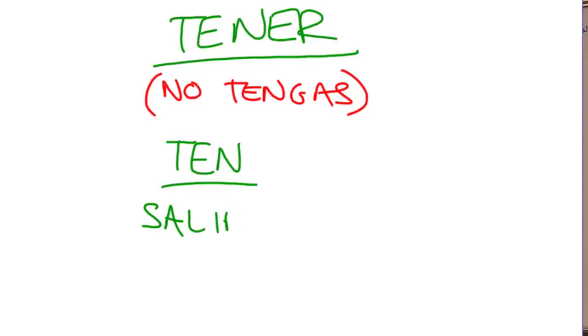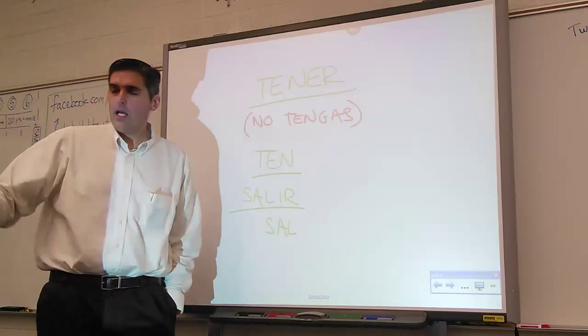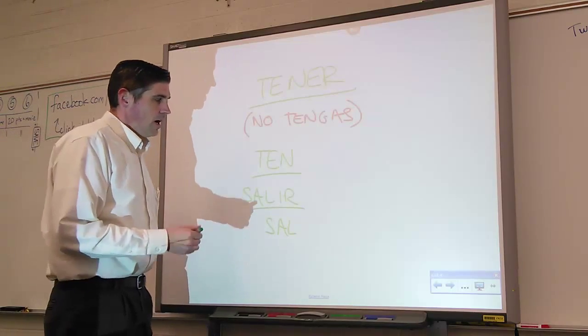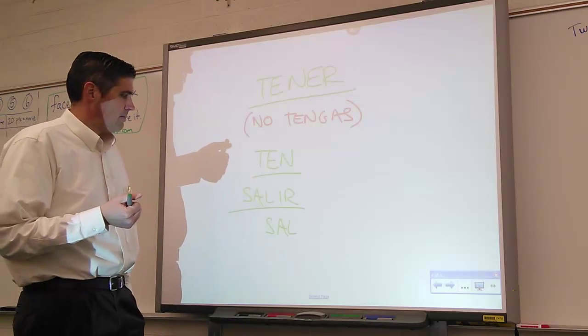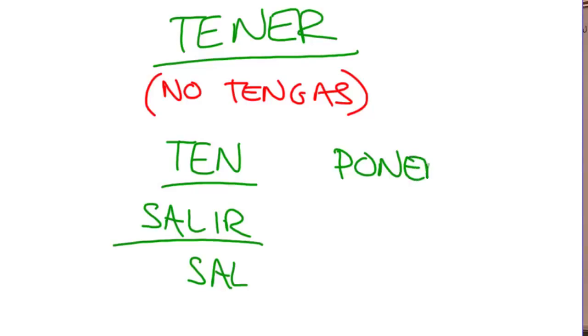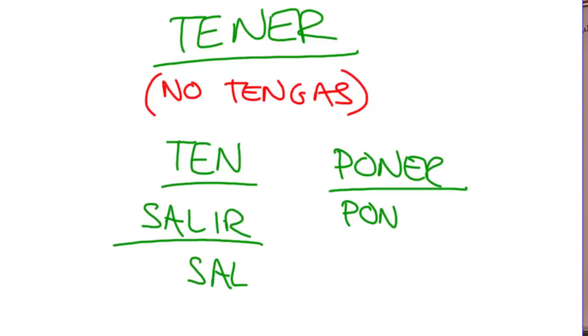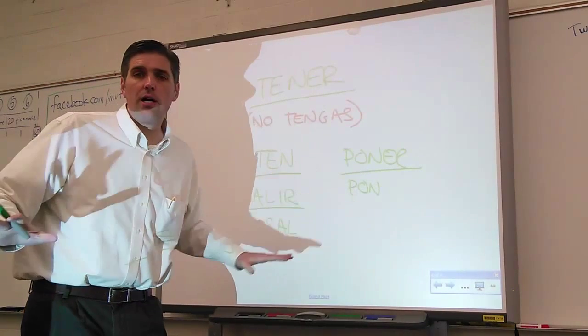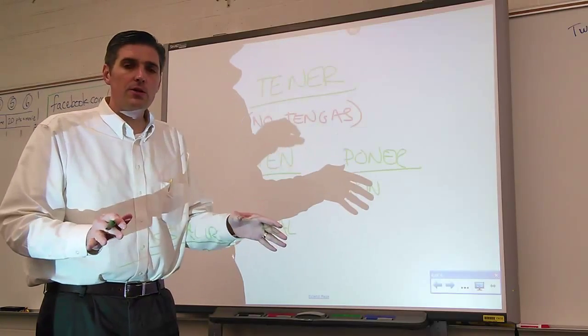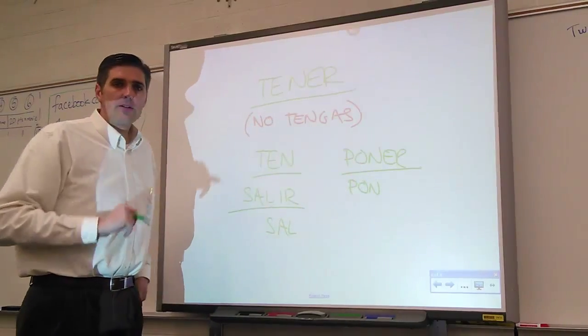Like, salir. Salir means to leave or to go out. So, if I'm telling somebody, get out, leave, go, I'll take the yo form. Salgo, drop the, drop the yo. Sal. Sal inmediatamente. Leave immediately. What are some other go verbs? Poner. Poner. To put it to place. Put your book under the table. Pon tu libro pon. Take the yo form. Pon. Okay, so these are the irregular affirmative tú commands. So, if you're lost with that other stuff, forget that for now. And just remember that when you're telling somebody to do something with one of these go verbs, you just drop the go, and that's the way you tell them to do it.